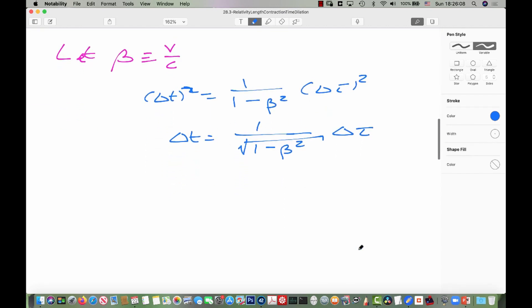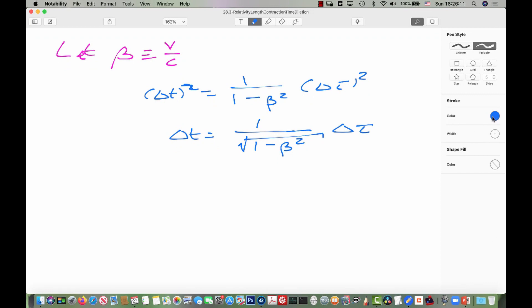Let me introduce some notation here. Remember, this combination, v over C, shows up so much that it gets its own special symbol. We let beta, we define beta to be v over C. Then we can rewrite delta t squared equals 1 over 1 minus beta squared delta tau squared. Once again, this combination in front of the delta tau shows up so often in relativity, it gets its own special notation and usually gets called gamma. So, finally, we can write that delta t is equal to gamma delta tau where gamma is equal to 1 over the square root of 1 minus beta squared.